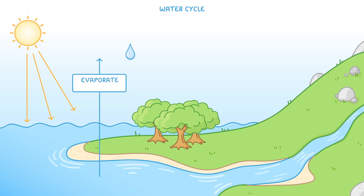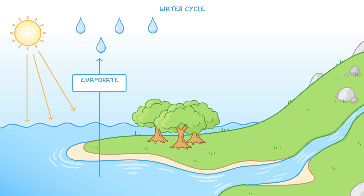This could be water from lakes, oceans, or rivers, but also water on land — for example, water in puddles or water in the soil. And don't forget that there will also be evaporation of water from the leaves of plants, which we call transpiration.